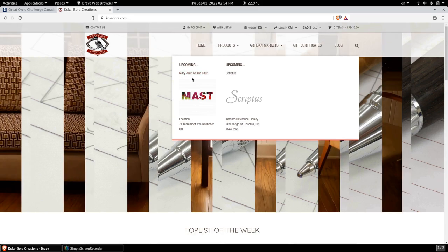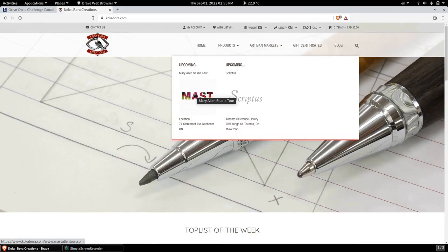The first one is the Mary Allen Studio Tour or MAST for short and it is happening on September 24th and 25th or the last weekend of September. And it is happening in the Uptown Waterloo area and since I live a little bit further away from there, I will be exhibiting along with other artists and the location is right here.